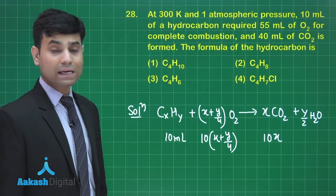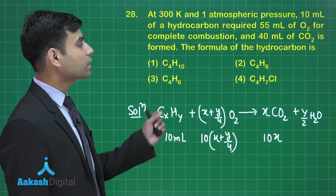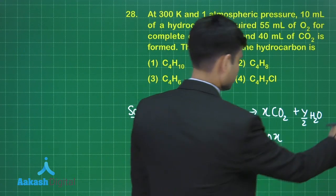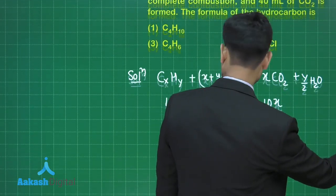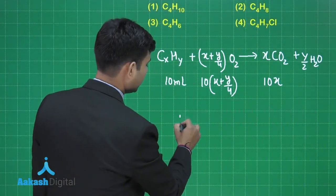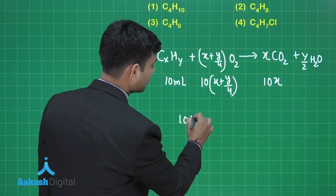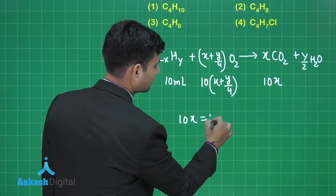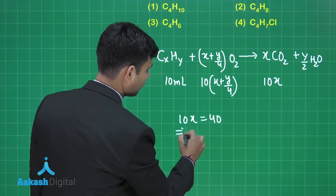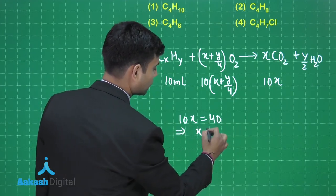From the question, we have 40 ml of CO2. So 10x should be equal to 40, hence the value of x will be equal to 4.